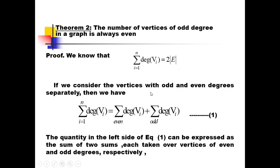We consider this sum by separating odd and even degree vertices. The total sum involves vertices whose degree is even and vertices whose degree is odd. We can write the sum of degrees as: the sum over vertices of even degree plus the sum over vertices of odd degree. The left-hand side is always even since it equals twice the number of edges. The sum over even-degree vertices is also even, because adding even values always gives an even number.